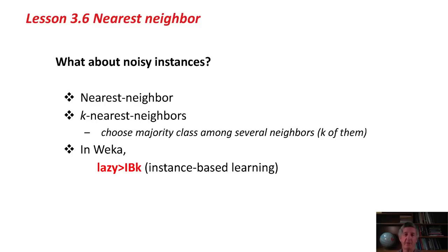You can guard against that by using k nearest neighbors, say 3. k might be 3 or 5. You look for the 3 or the 5 nearest neighbors and choose the majority class amongst those when classifying an unknown point. That's the k-nearest-neighbor method. In Weka, it's called IBK, instance-based learning with parameter k. It's in the lazy class.